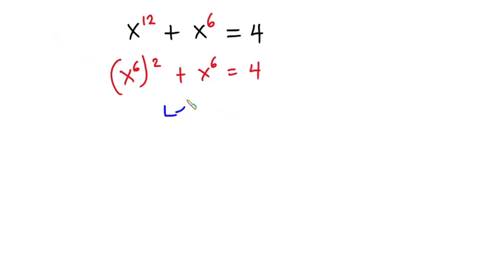Now from here I'm going to let x to the 6th power equal to y, where y is greater than 0. That means y should be positive. So this equation now becomes y to the second power plus y is equal to 4.